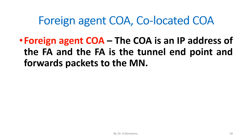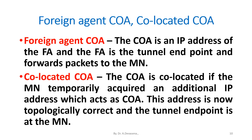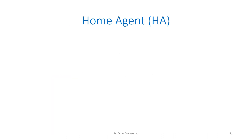Foreign agent COA: The COA is an IP address of the FA. The FA is the tunnel endpoint and forwards packets to the MN. Co-located COA: The COA is co-located if the MN temporarily acquires an additional IP address which acts as the COA. In this case, the tunnel endpoint is at the MN.